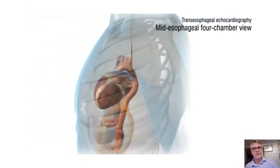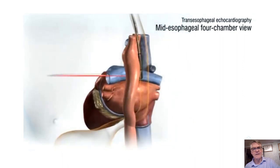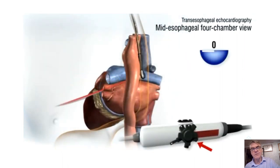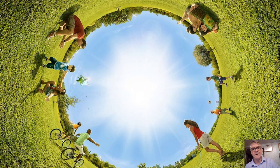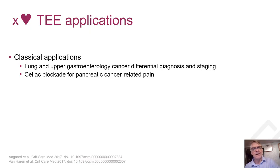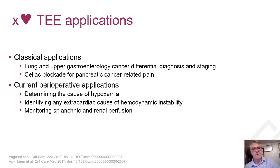When we look at the heart with TEE, there is no reason why we cannot look to the right, to the left, and also below the diaphragm. Extracardiac TEE applications have classically been for lung and upper GI cancer differential diagnosis and celiac blockade for pancreatic cancer. In terms of perioperative application, this is a useful technology to determine the cause of hypovolemia, identify any extracardiac cause of hemodynamic instability or cardiac arrest, and to monitor splenic and renal perfusion. Per guidelines, TEE is indicated for unexplained persistent hypotension or hypoxemia, which can be of entirely non-cardiac origin.